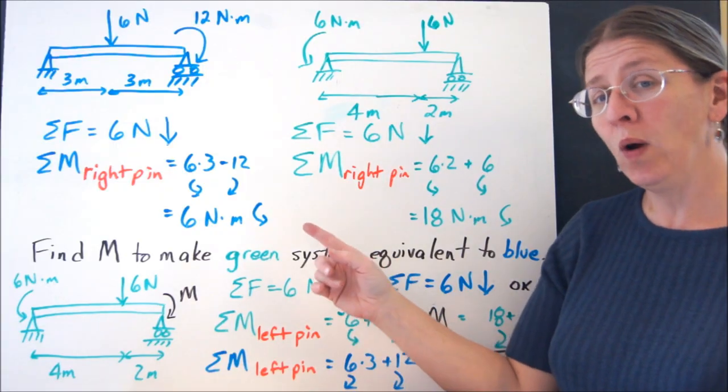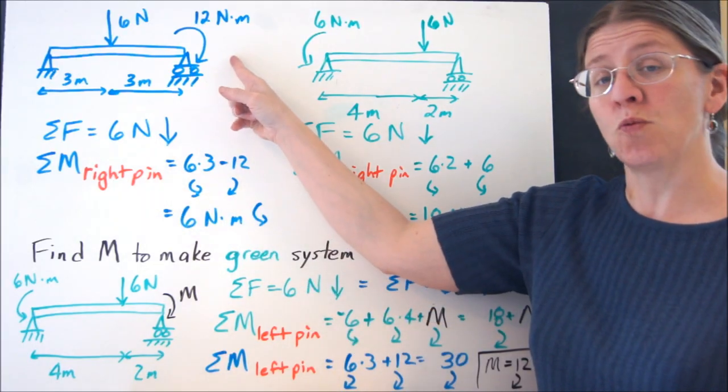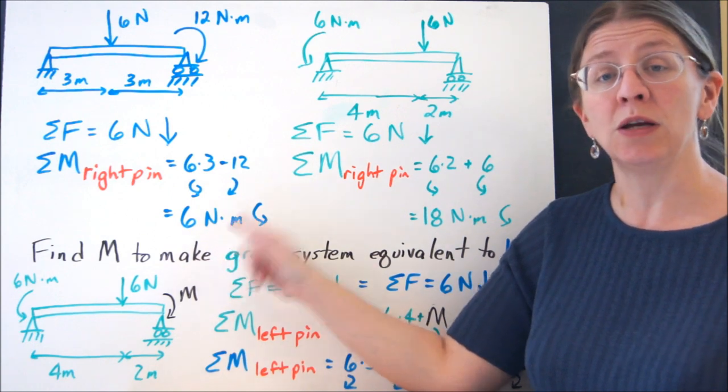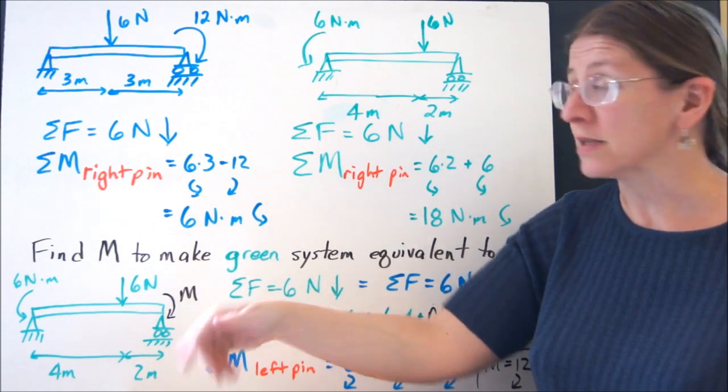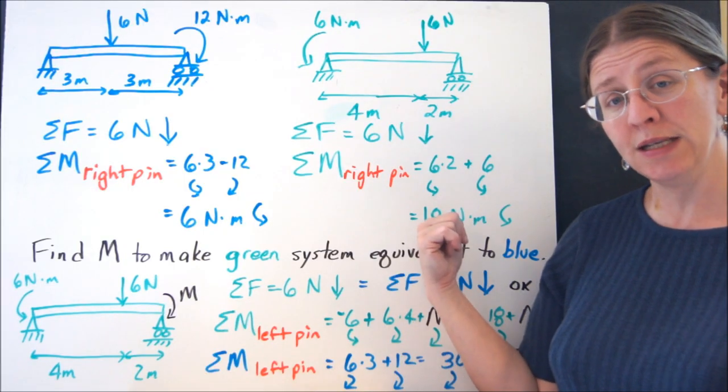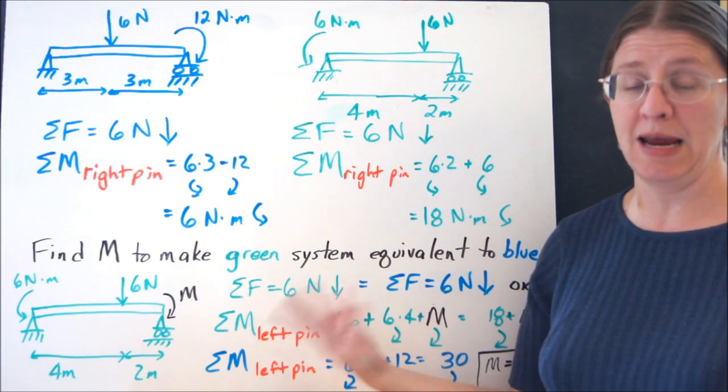But if you pick a point, I get to pick any point I want. For example, if I pick this right pin, when I sum the moments on this side, I get 6Nm counterclockwise. When I sum the moments at the same point at the right pin on the green system, I get 18Nm counterclockwise. Those are not the same.